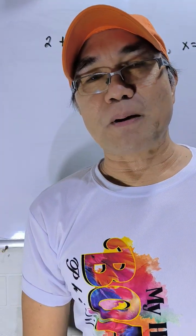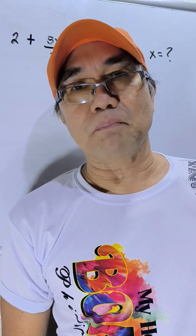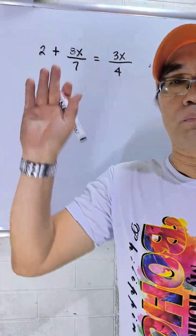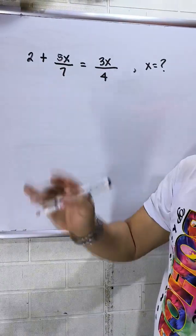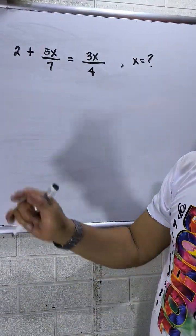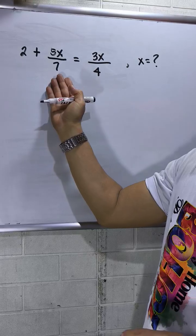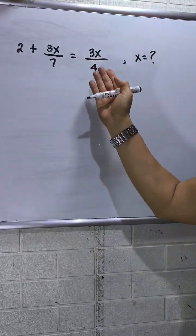Hello to everyone, especially to the junior high students and BSE major math students. Please join with me on this topic in algebra. So this is a rational equation. I have here 2 plus 5x over 7 equals 3x over 4.